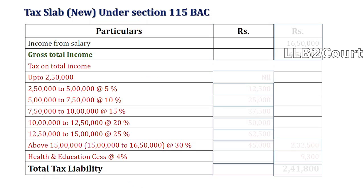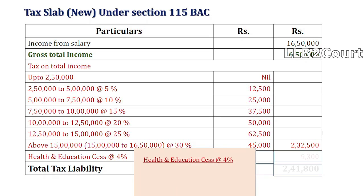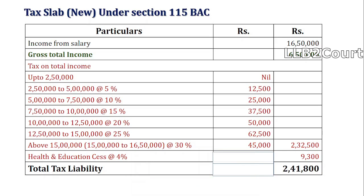After summing up, the total tax comes to 2 lakh 32,500. The table for the new regime is similar to the old regime table, with the slab rate and calculation filled in. Now calculating the health and education cess at 4%: 2 lakh 32,500 into 4% is 9,300. So the total tax payable is 2 lakh 41,800. Ananya has to pay 2 lakh 41,800 if she takes advantage of Section 115BAC, which is what the new tax regime provides.